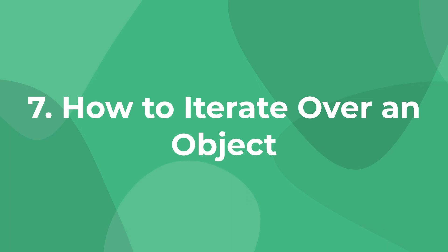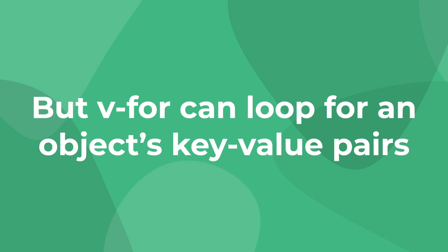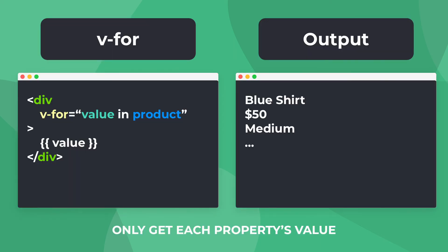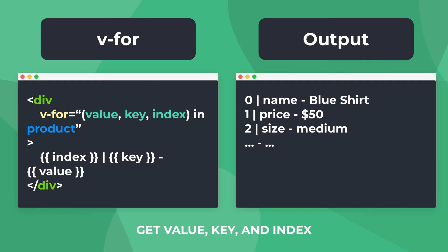Our final tip is iterating over an object. So far we've only looked at using v-for to iterate through an array, but we can just as easily iterate over an object's key-value pairs. Similar to accessing an element's index, we need to add more than one value to our v-for. With a single argument we iterate over the object's items; with two arguments we get both the items and the keys; and with a third argument we get the items, keys, and index. Depending on the data you need — for example, if you're displaying a table — this can be a great way to iterate over an object.